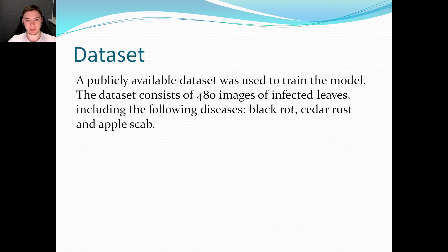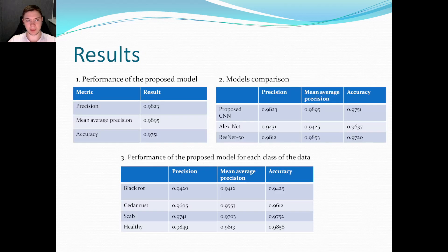A publicly available dataset was used to train the model. The dataset consists of 480 images of infected leaves, including the following diseases: black rot, cedar rust, and apple scab.